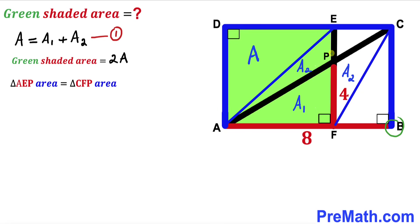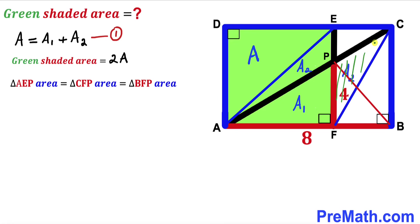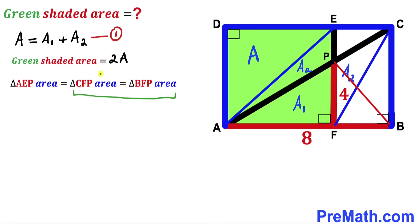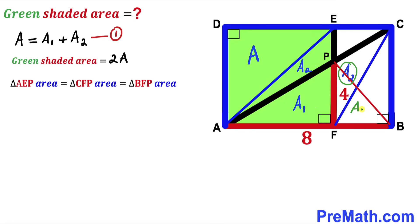Next, I am going to connect the two vertices B and P, giving us triangle BFP. The area of triangle CFP equals the area of triangle BFP, since both triangles have the same base and the same height. We know triangle CFP area is A sub 1, so triangle BFP area is A sub 1 as well. Therefore, triangle AEP area equals triangle BFP area — both are A sub 1.